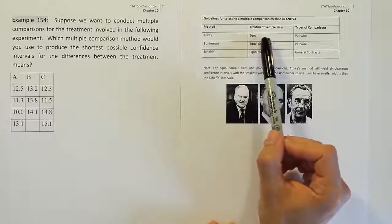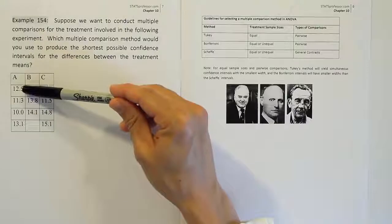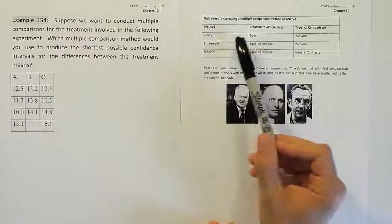But the problem is Tukey requires equal sample sizes. It requires a balanced design where we each have, for example in this case, if everyone had four values in their column, we would say that we could use Tukey.